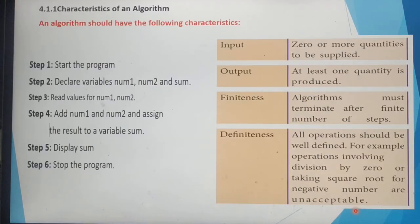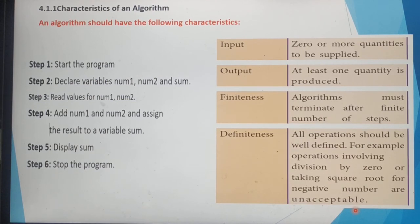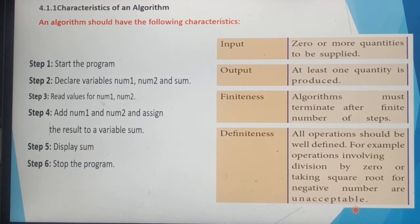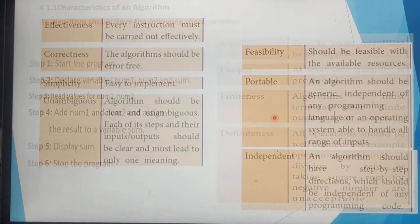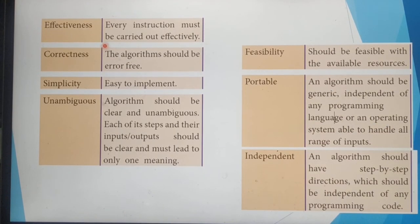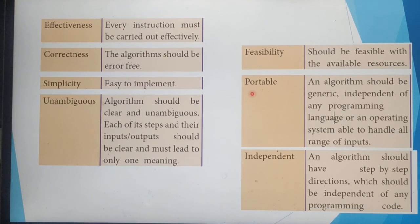Children, here we have seen the different characteristics of an algorithm: input, output, finiteness, definiteness, effectiveness, correctness, simplicity, unambiguous, feasibility, portable, and independent. These are all the important characteristics of an algorithm. Thank you, students.